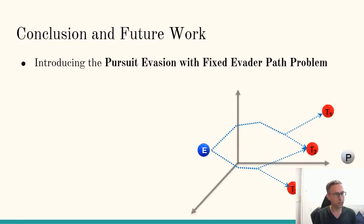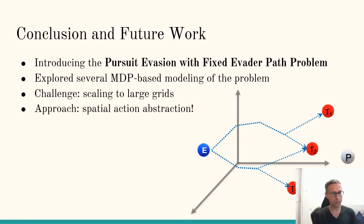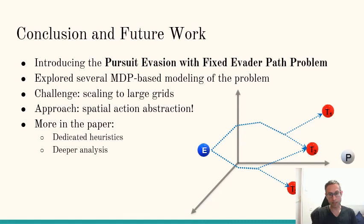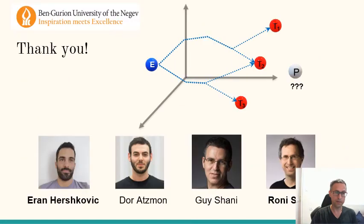So to conclude, we introduced a new problem called pursuit evasion with fixed evader path, which is motivated by a real world problem. We explored different ways to model it based on MDP. And we addressed the problem of scaling to large grids by proposing a spatial action abstraction that works well here, but also can work for other problems with three-dimensional similar properties. In the paper, there is also this level of heuristics and deeper analysis. And in the future, we are now working on comparing this with a deep learning approach and creating a grid agnostic state representation. That's it. Thank you.